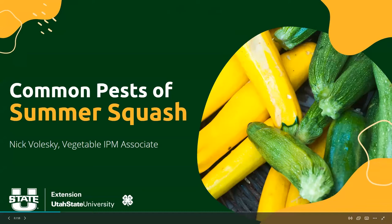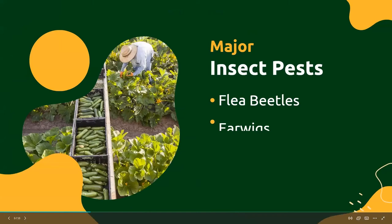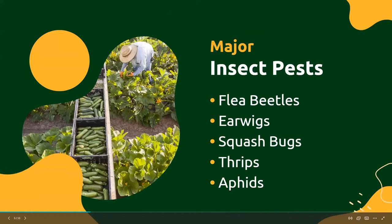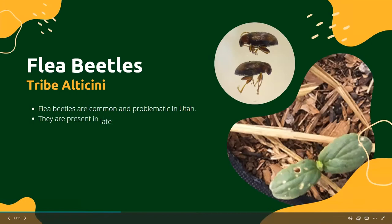Tonight I'm joined by my colleague Dr. Claudia Ischwitz. We are going to discuss some of the major arthropod pests and diseases that we see in our summer squash here in Utah and the Intermountain West. Most if not all of these pests can also affect pretty much all of our cucurbit crops, including melons, cucumbers, and winter squashes. There are five common insect pests I've been seeing quite a bit this season: flea beetles, earwigs, squash bugs, thrips, and aphids.